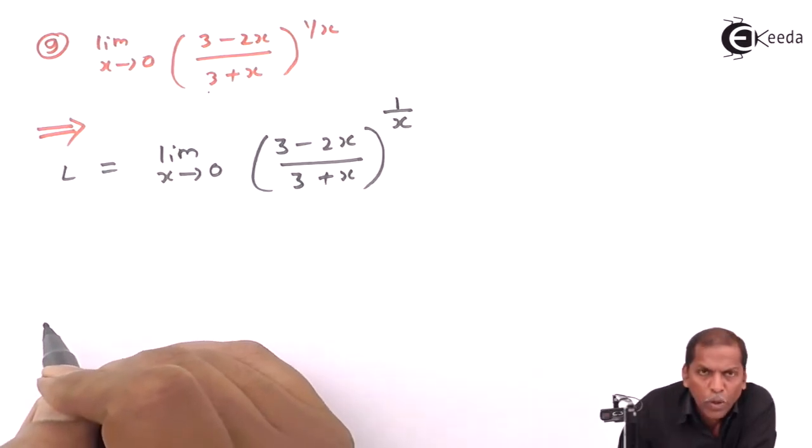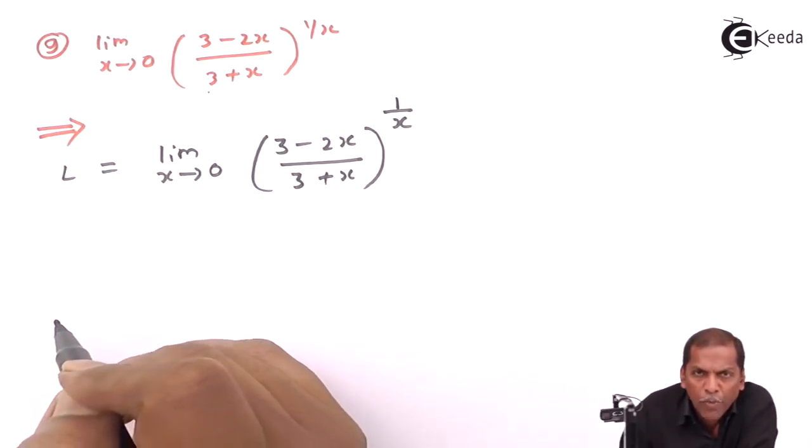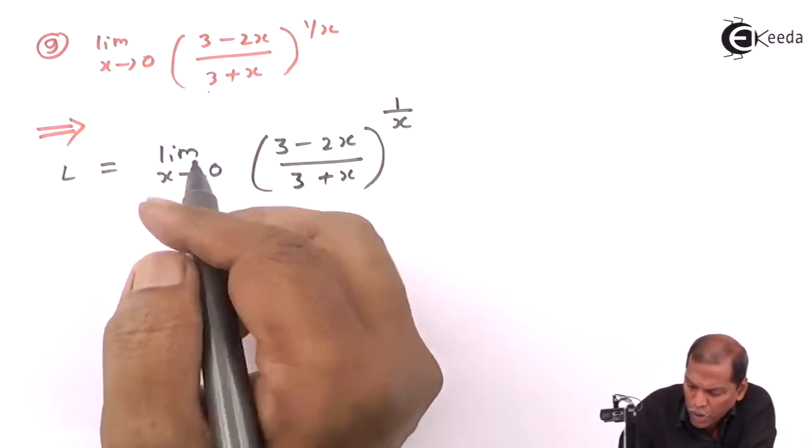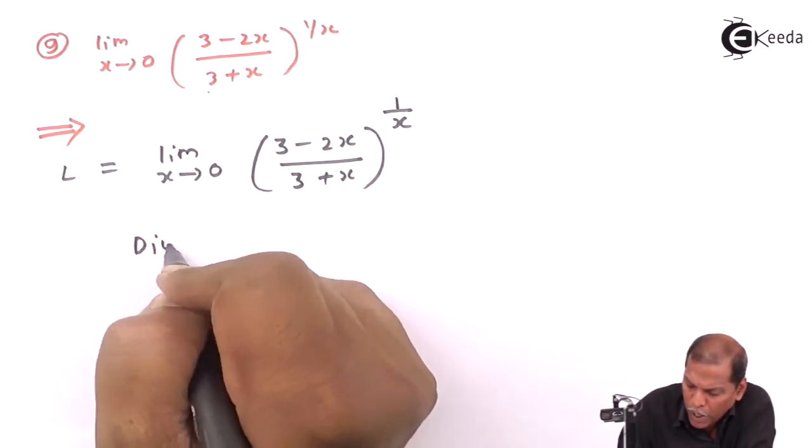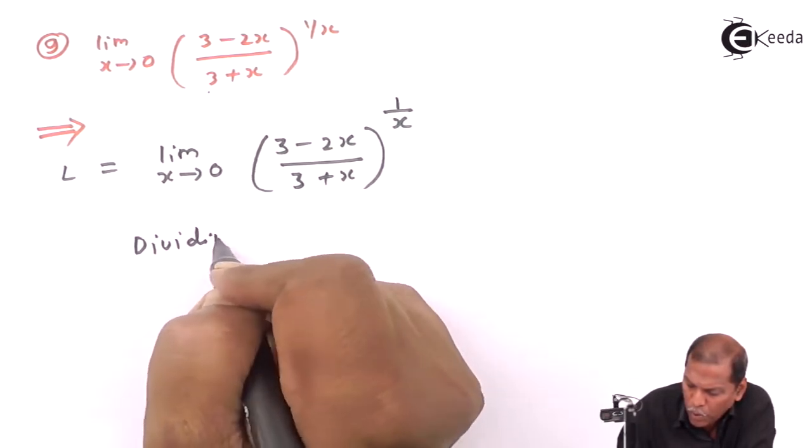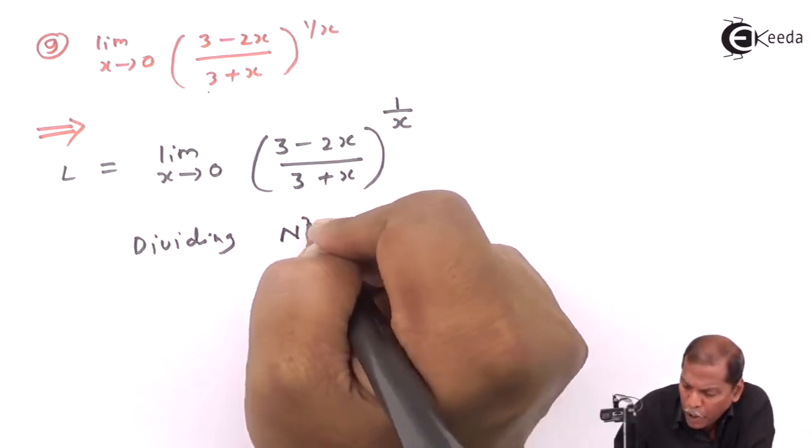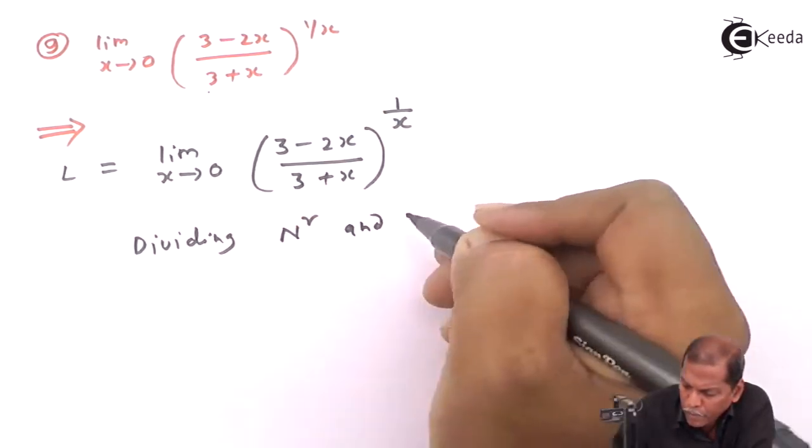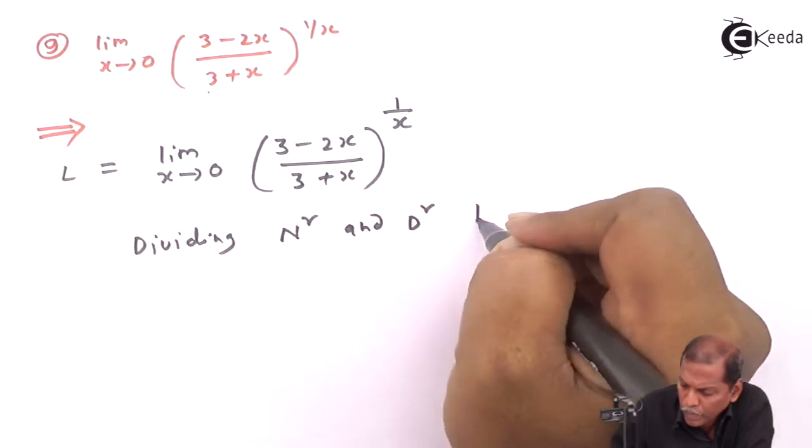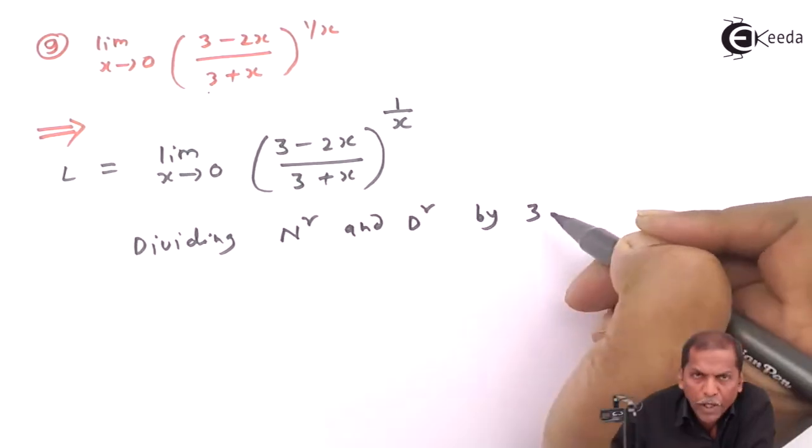Now here to get the rule, we require 1 in the first position. So in this case we have to divide numerator and denominator by 3.